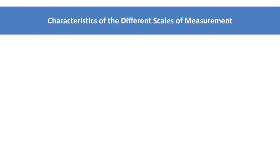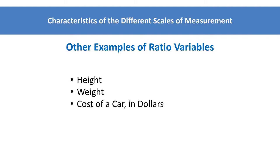Some other examples of ratio variables include height, weight, cost of a car in dollars. For each of these ratio variables, the distance between pairs of consecutive numbers is assumed to be equal, and there is a meaningful zero point.